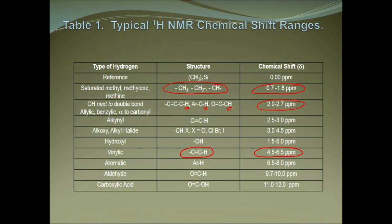For this experiment, there are only three regions of interest, and really only two worth memorizing. One is the alkyl region, 0.7 to 1.8 ppm. The other is the alkoxy region, about 3 to 4.5 ppm, where we find CH next to an electronegative atom such as oxygen. Since you are analyzing alcohols, this region is important. There is also a region for the OH itself, but the range 1.5 to 5 ppm is too broad to be of real use, and we will discuss how to identify that OH peak when looking at actual spectra.